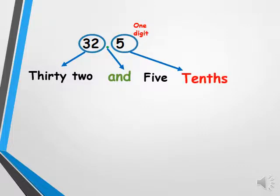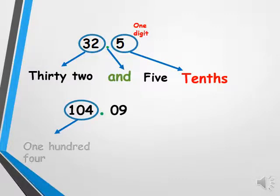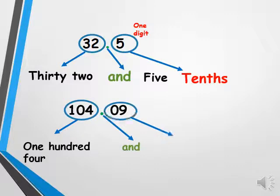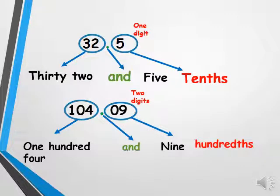Now if we have 104.09, 104 is the whole number, so it is one hundred four as usual. The decimal point is 'and'. Since we have two digits after the decimal, we say nine hundredths.